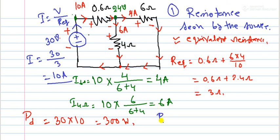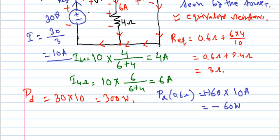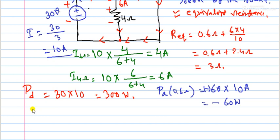Voltage is 6 volts, current is 10 amperes. We use minus sign because it's absorbing, so minus 60 watts. For the 4 ohm resistor: voltage is 24 volts, current is 6 amperes.